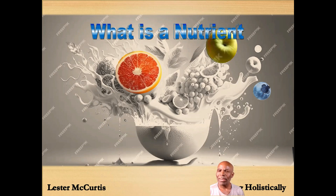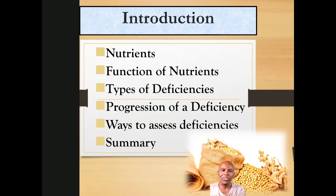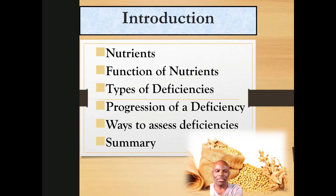Now, there are three functions of a nutrient. We're going to talk about not only nutrients but the functions, types of deficiencies, the progression of a deficiency, ways to assess deficiencies, and then we're going to wrap it up and have questions at the end.